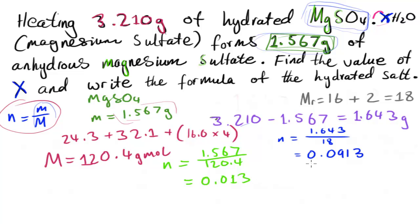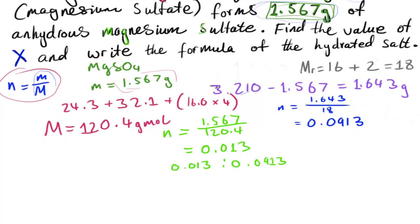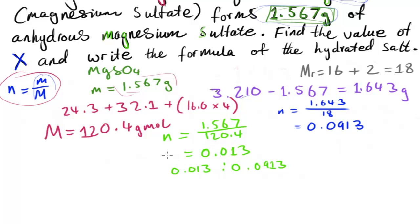Now we have a ratio: 0.0913 moles of water for every 0.013 moles of magnesium sulfate. We want to know the moles of water per one mole of magnesium sulfate, so we divide both by 0.013. This turns the MgSO4 quantity into one, and whatever number results will give us the value of x, rounded to the nearest whole number.